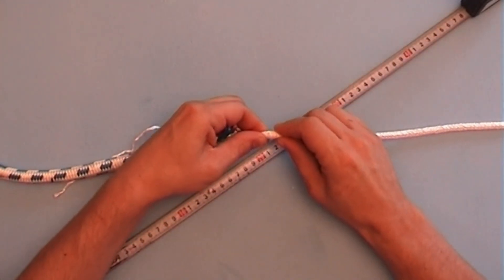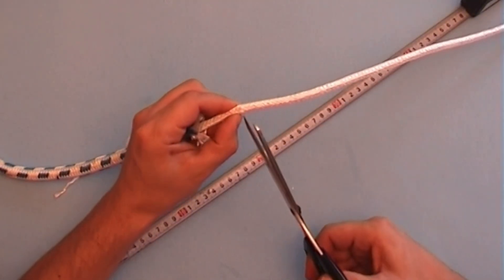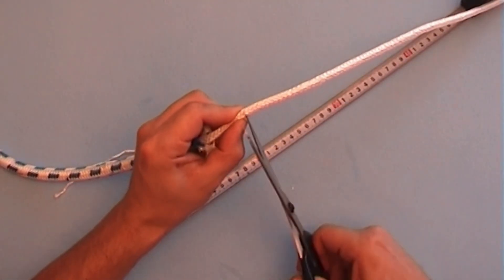Carefully cut this inter-sheath without damaging the core. Cut all the way around and then strip the inter-sheath off.